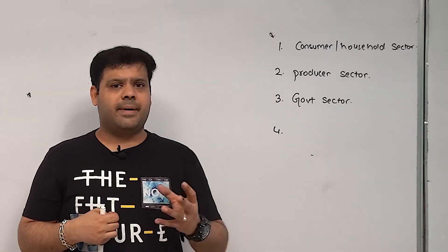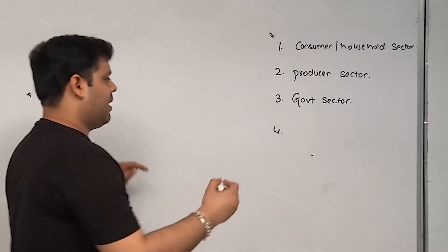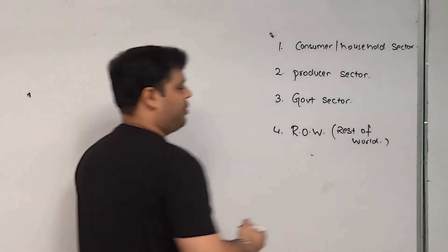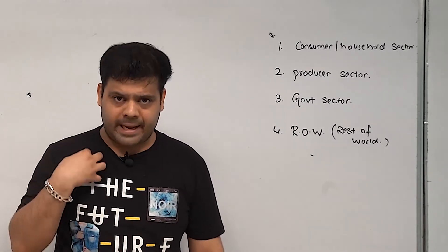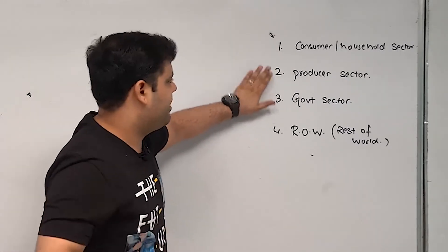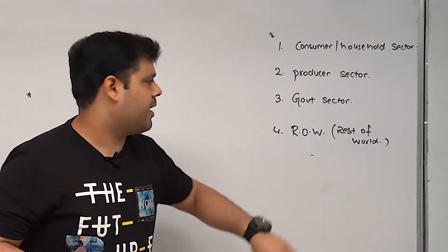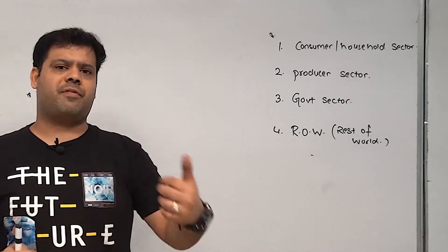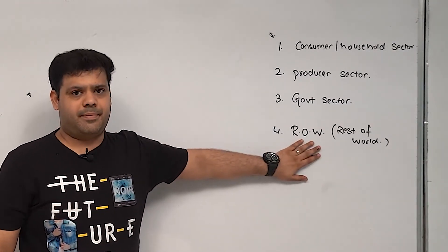So in the circular flow, government tax shapes the economy. The fourth sector is ROW — Rest of the World. Right now, when you are watching this lecture, I belong to the producer sector. You belong to the consumer or household sector. The fees you are giving me, the GST is going to the government sector. And whichever phone or software I am using — maybe it is from China or Japan — that represents the rest of the world sector.